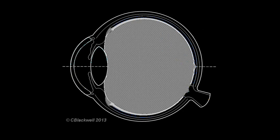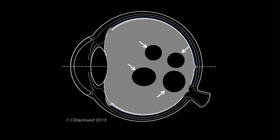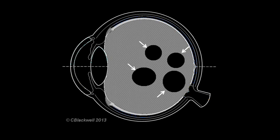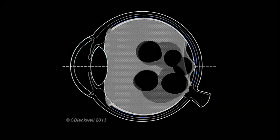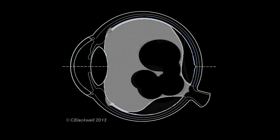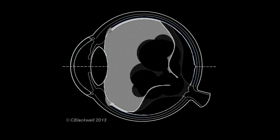Two key changes happen. One, pockets of liquid form in the body of the vitreous, the dark patches at the arrows. And two, the vitreous progressively separates from its attachments to the back part of the retina. Keep that sequence in mind because we are going to return to that in a minute.